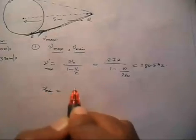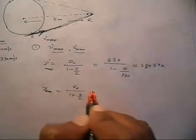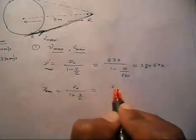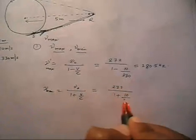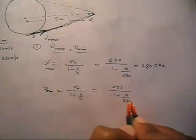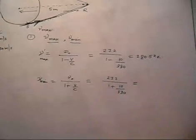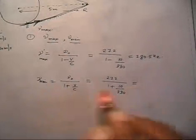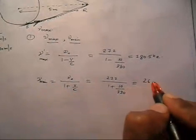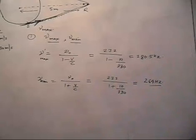N_min will be N0 divided by (1 plus V by C). This is 272 divided by (1 plus 10 divided by 330). If you calculate this value, it comes out to be 264 Hz. So this is the minimum frequency.